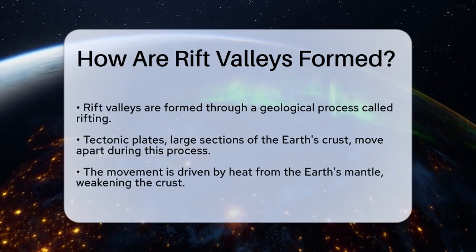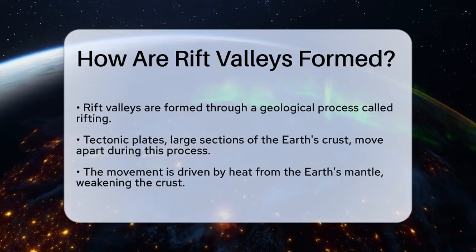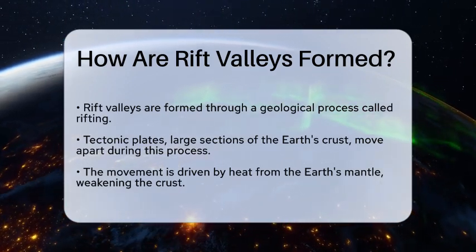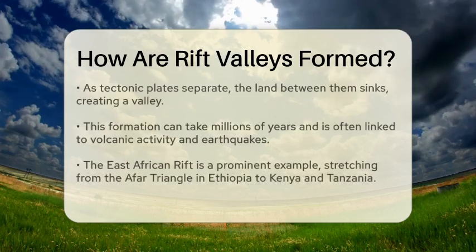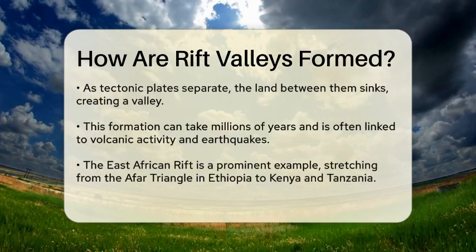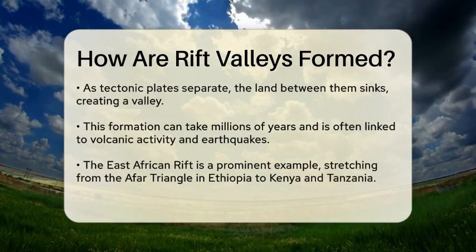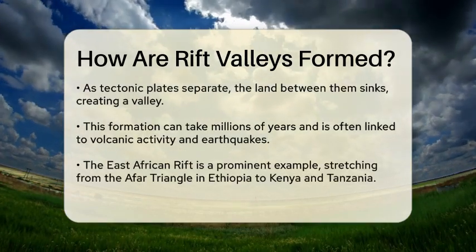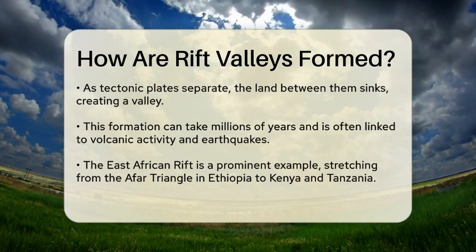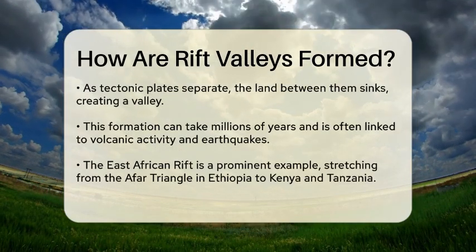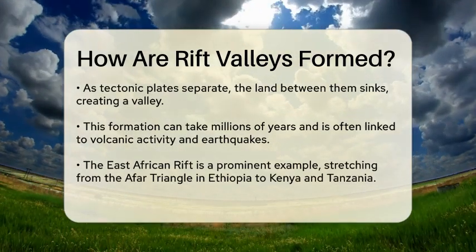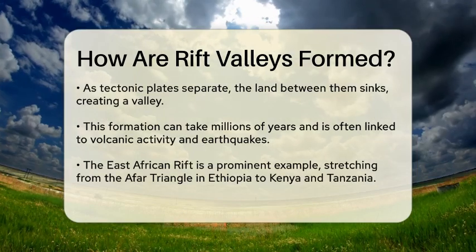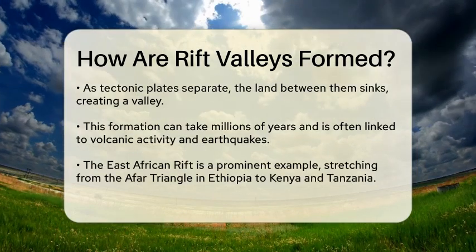Rift valleys occur when tectonic plates, which are large sections of the Earth's crust, begin to move apart. This movement is typically driven by the heat from the Earth's mantle, which causes the crust to weaken. As the plates separate, the land between them sinks, creating a valley.